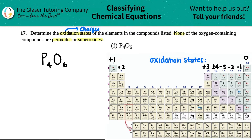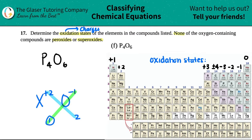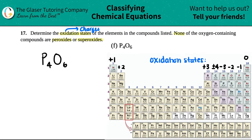Now let's get into it. Remember, when we were learning how to make compounds, we always took the charges and crisscrossed them downward to tell us how much of each element we have. What we're going to do now is the complete opposite — we have the subscripts, four for phosphorus and six for oxygen, and we'll use those subscripts to crisscross back up to get the charges. It works both ways.